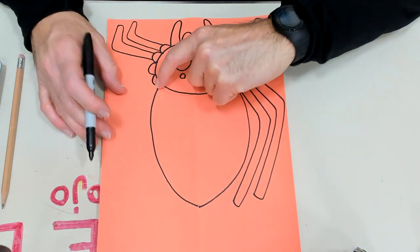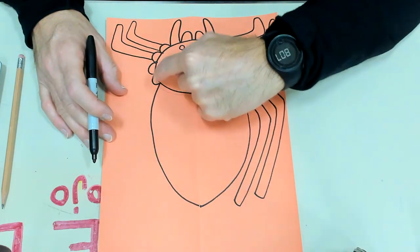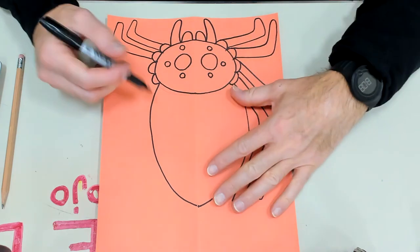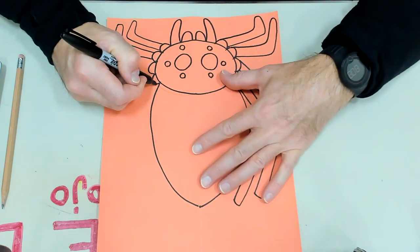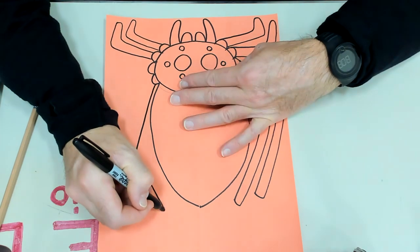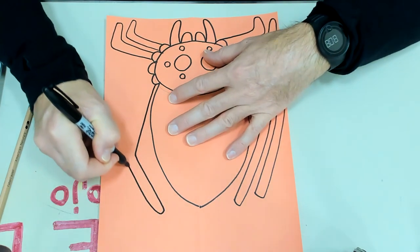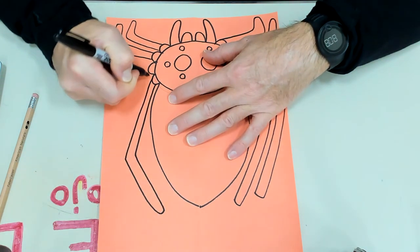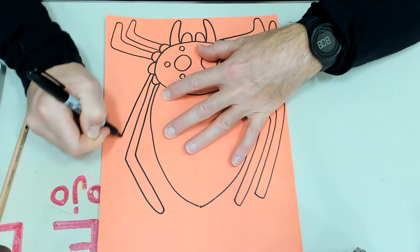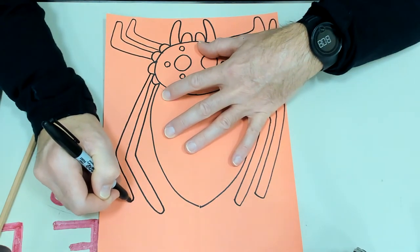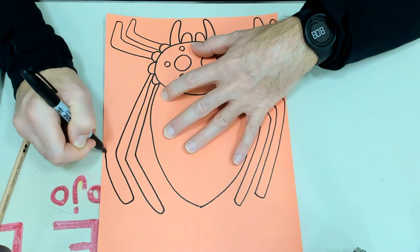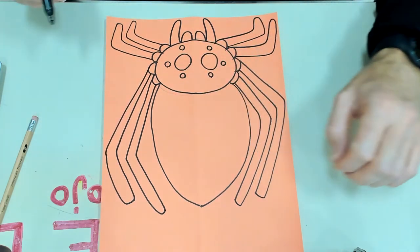I'm going to do this leg first so that I make sure I leave room for this leg. So I'm going to go tight to the body and down, curve and back up. And then I can make this one go down not quite as long as that because it's closer to the top. There.